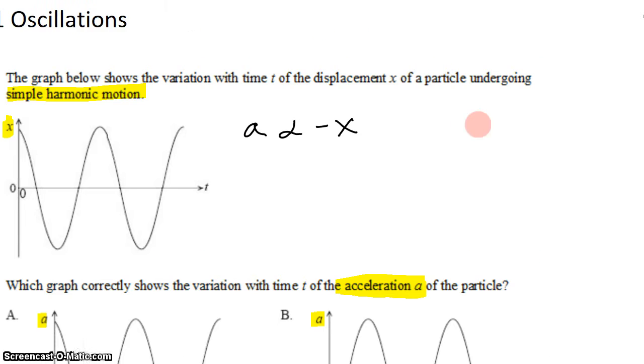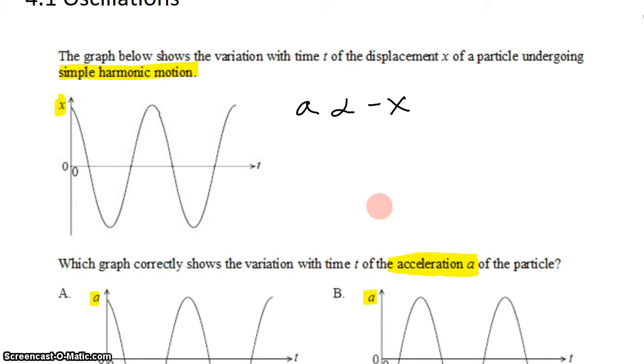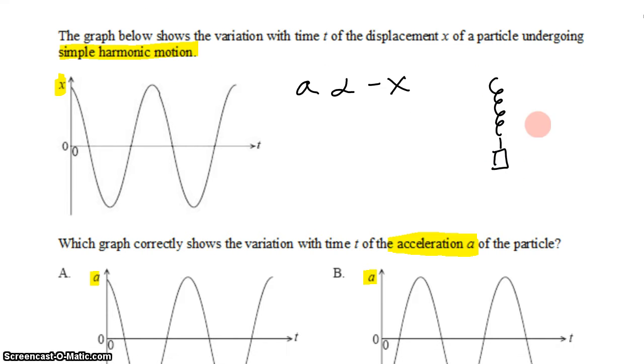It works in the sense that we need a restoring force. So if we have a spring and mass system, and we pull it down from its equilibrium position, the displacement is down, but the acceleration is actually up.